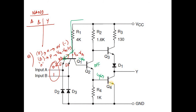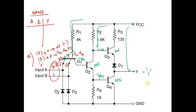Very little or no current flows into the base of Q2. The collector-base junction carries no current, so Q2 is off. If Q2 is off, it cannot source current to the base of Q4, therefore Q4 is also off. Meanwhile, current from VCC flows through R2 but encounters a block because Q2 is off, so almost all the current flows into the base of Q3, turning Q3 on. The output Y is connected to VCC through the on transistor Q3 — it is pulled up to VCC, meaning logic 1.